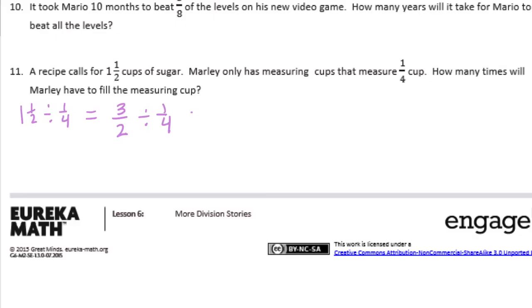But now I still need to find a common denominator. So for 2 and 4, my common denominator would be 4. So let's make 3 halves into fourths. I would get 6 fourths divided by 1 fourth, which would be equal to 6 over 1, or just 6. So she'll have to use the measuring cup 6 different times.